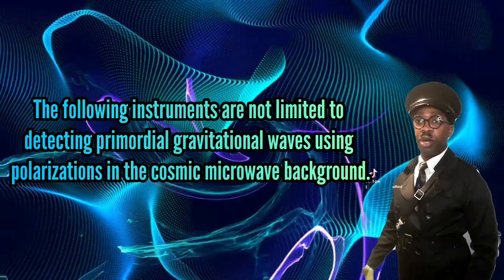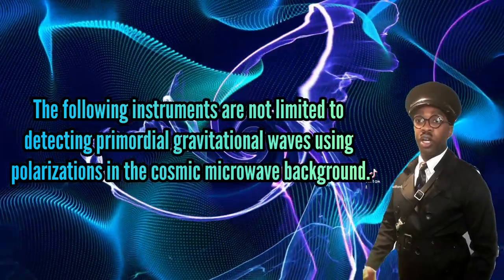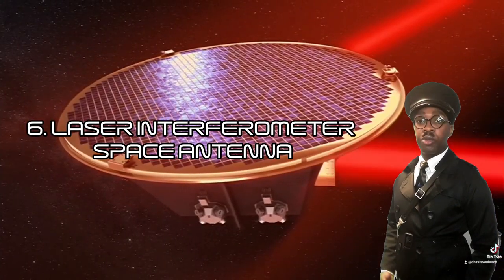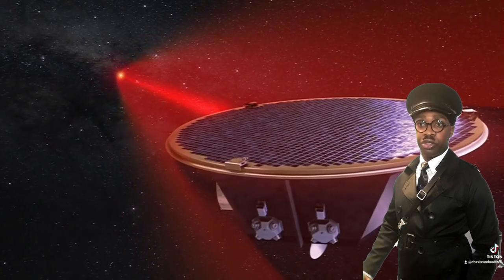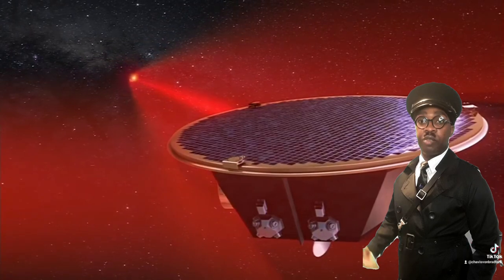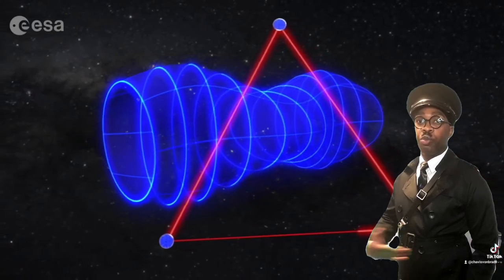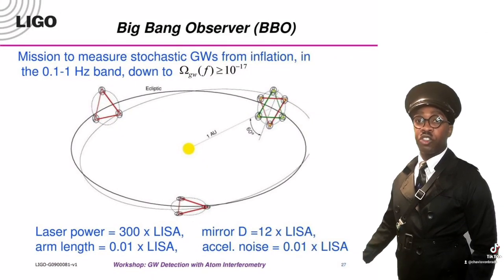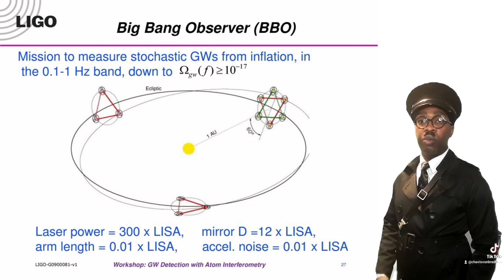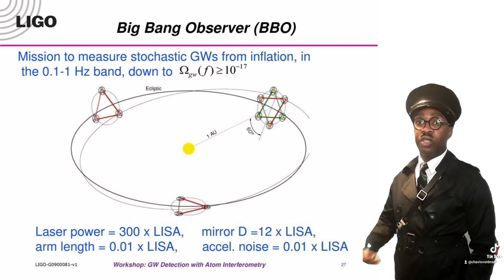These are instruments that can detect primordial gravitational waves without requiring polarizations in the cosmic microwave background. The Laser Interferometer Space Antenna, commonly known as LISA, is a projected space mission that uses an interferometer to detect and study primordial gravitational waves through the interference of superimposed waves. The Big Bang Observer, also known as BBO, is a proposed future space-based mission that will operate between 0.1 and 1 hertz, proposing a fleet of triangle interferometers operating on the same principle as LISA.